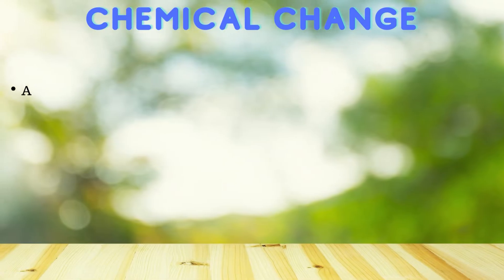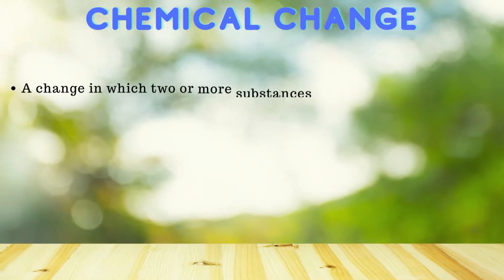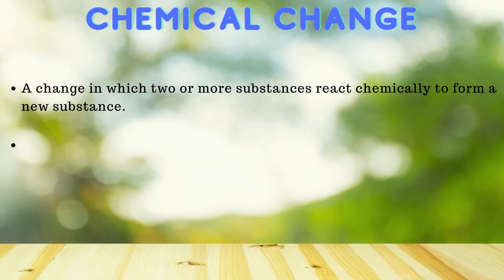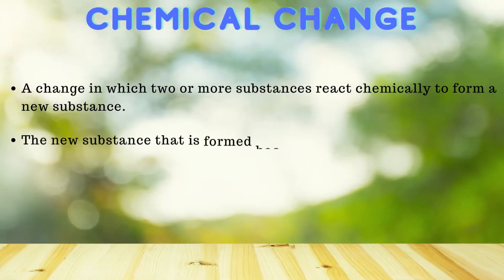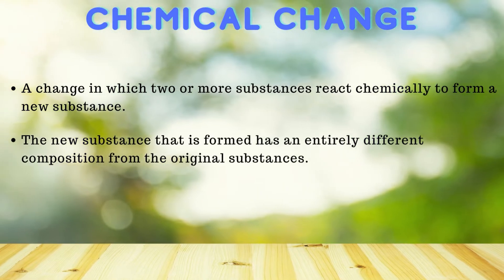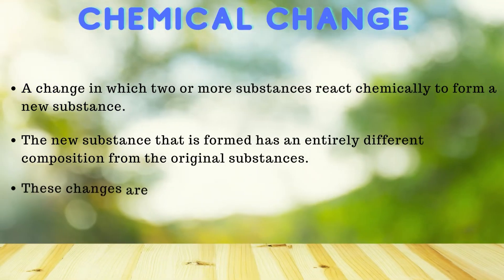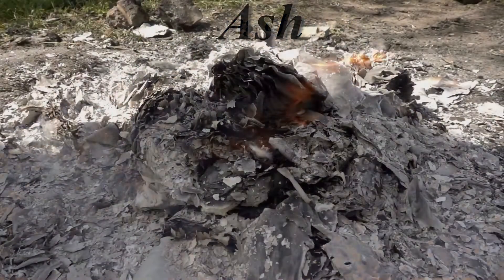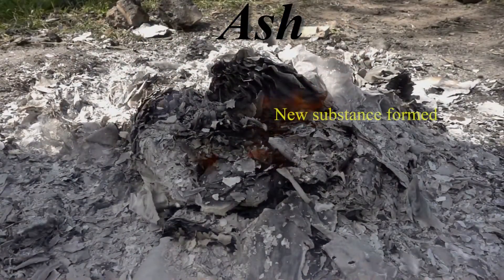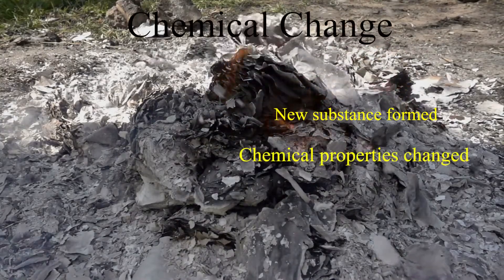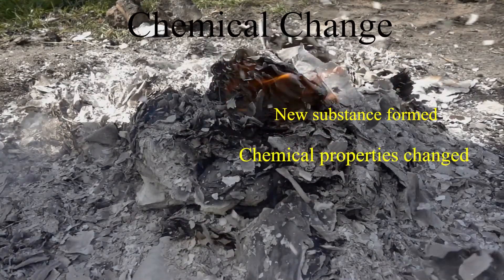Chemical change. A change in which two or more substances react chemically to form a new substance. The new substance that is formed has an entirely different composition from the original substances. These changes are mostly permanent. When we burn paper, it burns up to form ash. Since a new substance has been formed and the chemical properties of paper have changed, it is a chemical change.